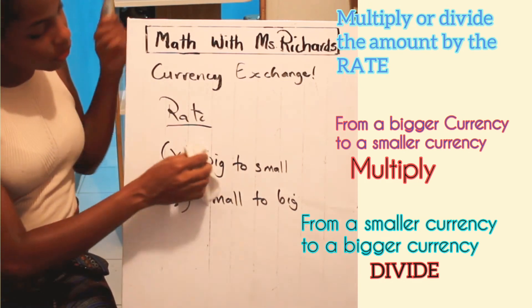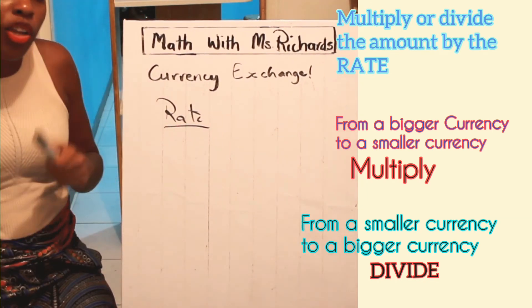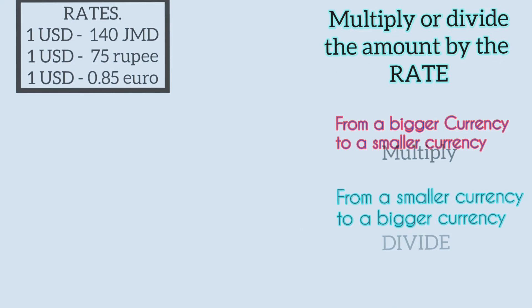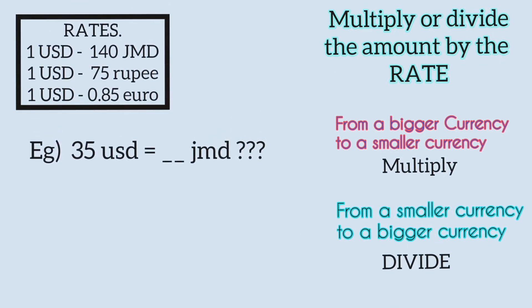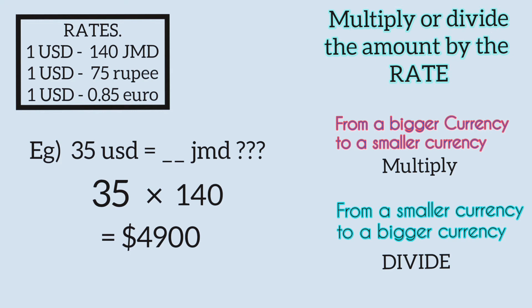Alright, so say for example we have some rates. Look at these rates. Now for this question, you have to convert from US to Jamaican dollars, which is a bigger unit to a smaller unit. So multiply the amount, which is 35 US dollars, by the rate, which is 140. So we get 4,900 Jamaican dollars.